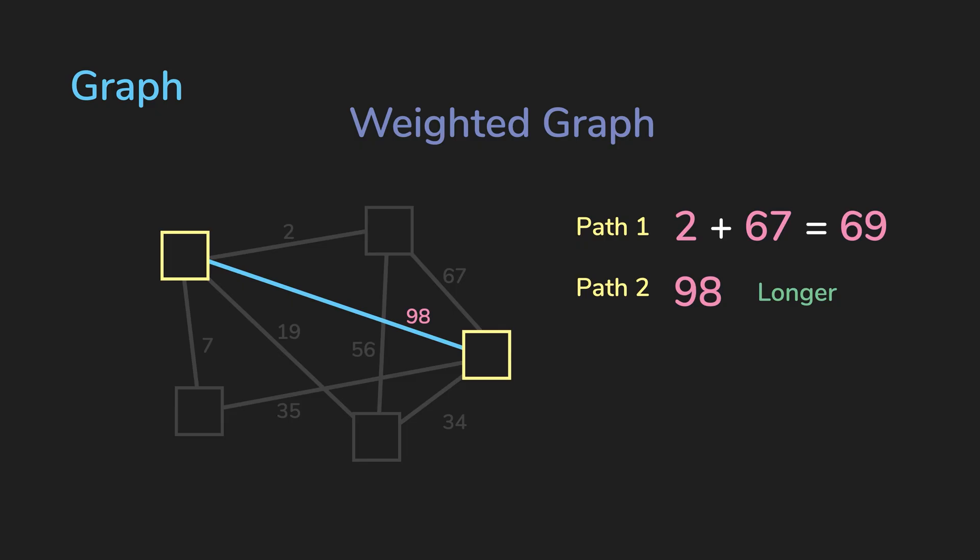So that was an overview of graphs and its mathematical definition. Next, we'll talk about different ways of representing graphs with code and the pros and cons of each method of representing a graph. All right, I'll see you in the next one.